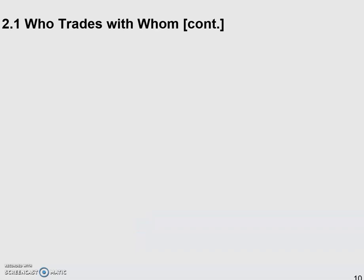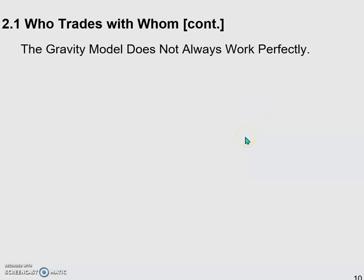In previous videos, we already introduced the gravity model of international trade. We also discussed the empirical evidence, and it looks like at least two pieces of evidence support the model — the hypothesis. Here, what we're going to see is that the model is not perfect. The model we use or estimate is just a simplified version of reality. We want to briefly discuss when or where the gravity model is not perfect.